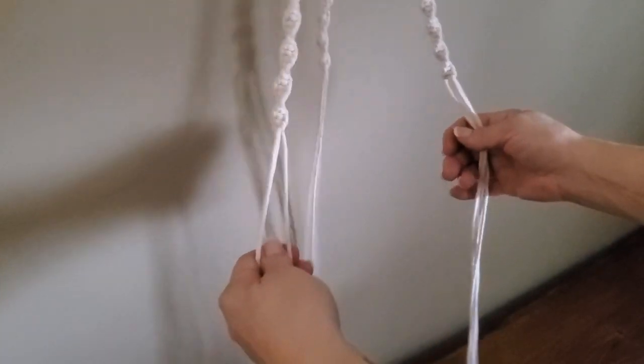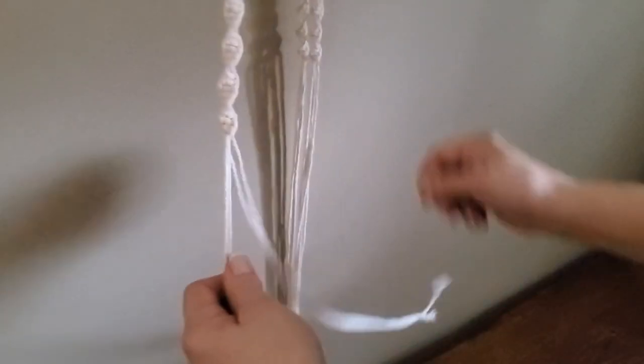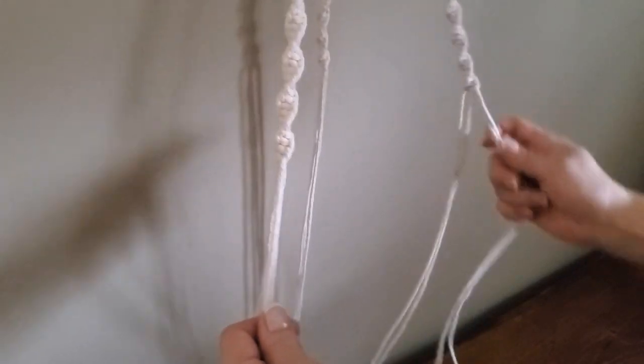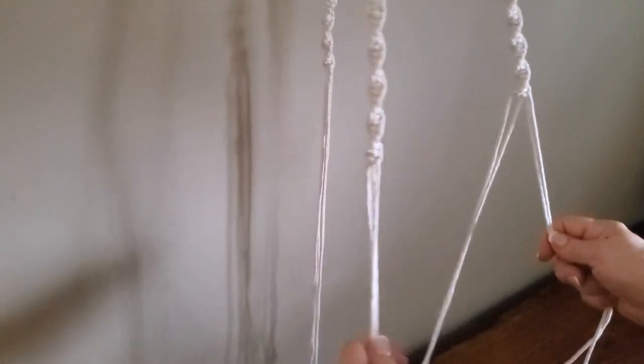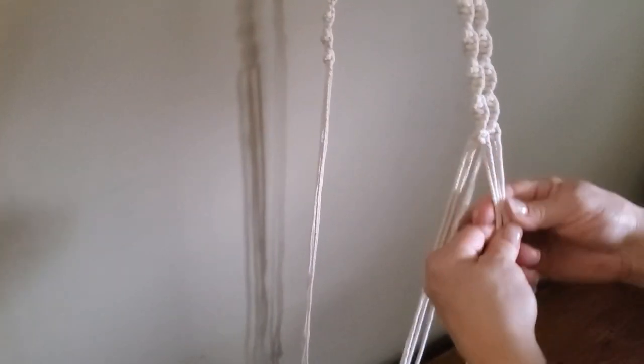So this section will be roughly the same length as the other knot series. Here you can see I've done the three sections the same. So now we're going to create the pot holder part. You take two of the cords from one of the arms and two cords from the next arm.